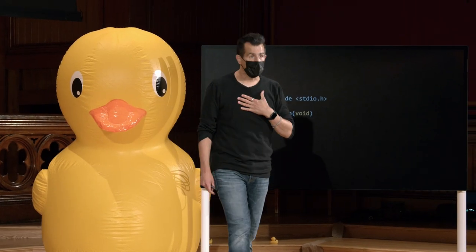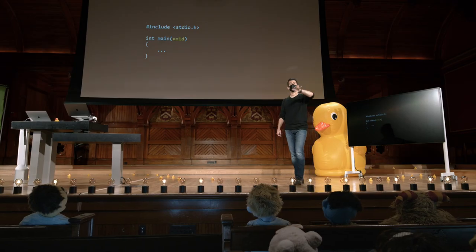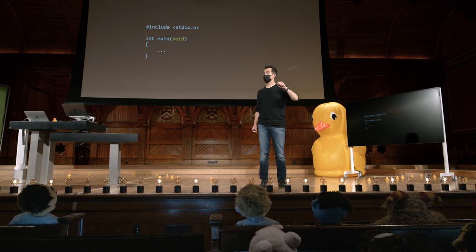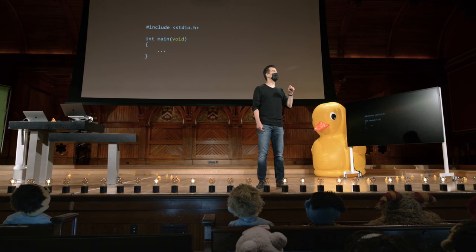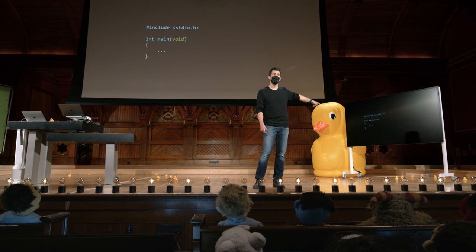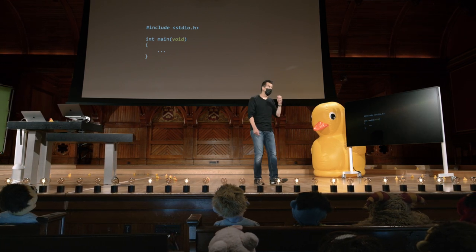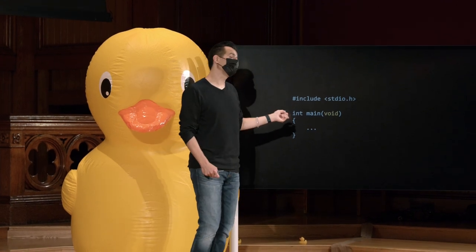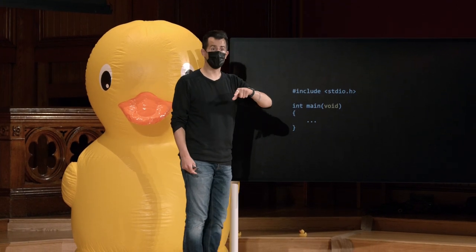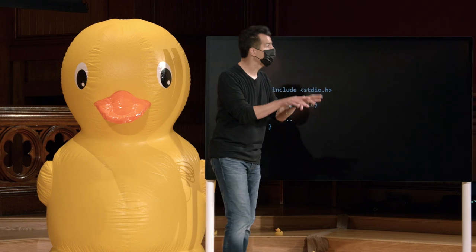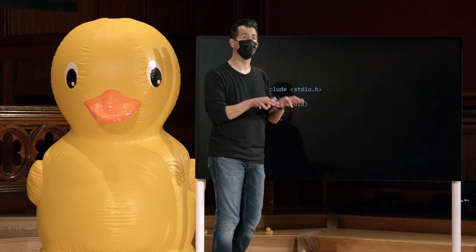O que isso significa para todos os programas que escrevi até agora, e você escreveu até agora, é que nenhum dos nossos programas usa argumentos de linha de comando. É isso que o void ali significa. Main é a maneira que você pode especificar que seu programa possa tomar alguns argumentos de linha de comando, ou seja, palavras após o comando em sua janela de terminal.